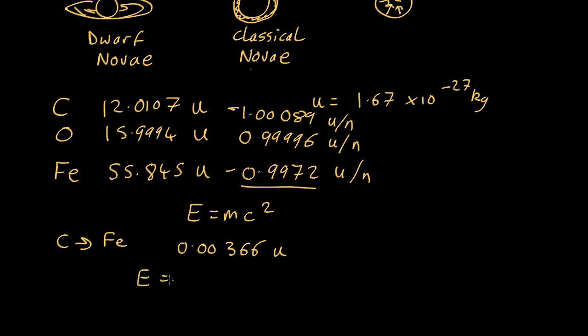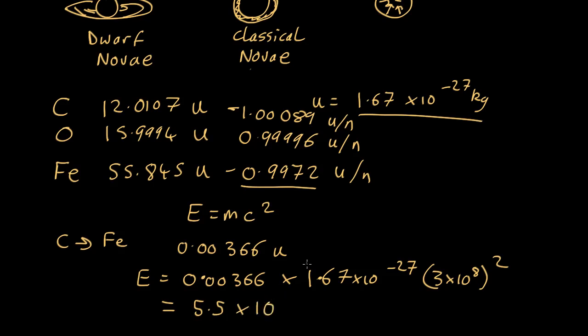The energy is given by E equals MC squared. So, the energy is equal to the mass, which is 0.00366, times the definition of an atomic mass unit, 1.67 by 10 to the minus 27, times the speed of light squared, 3 by 10 to the 8 meters per second squared.